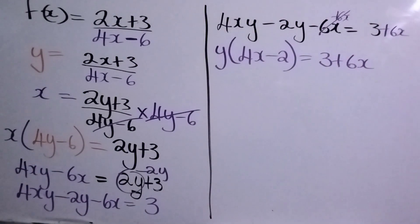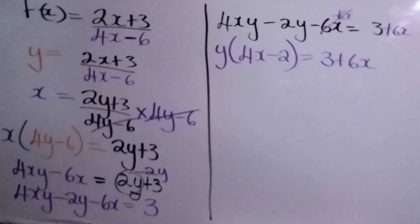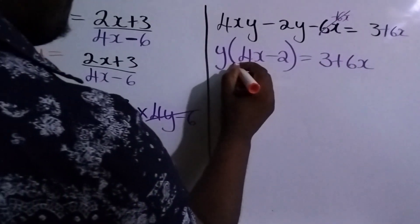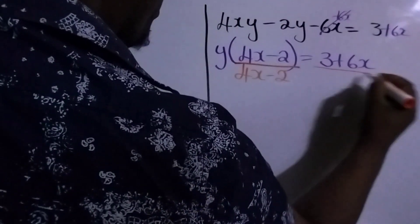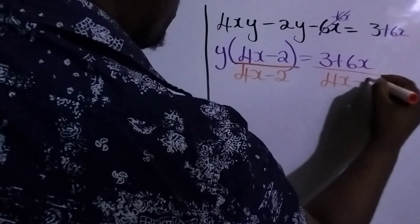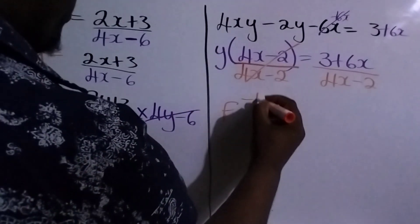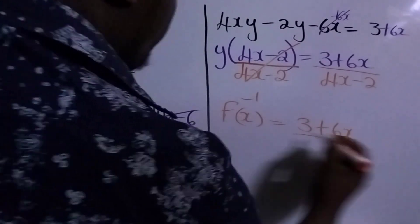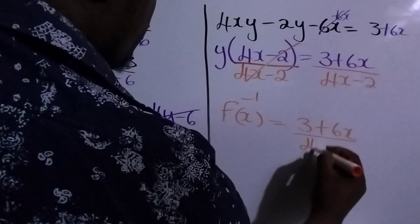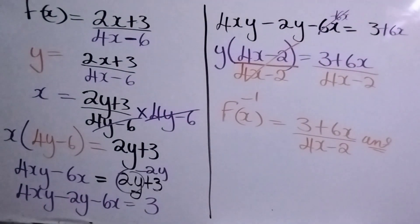And our final step is to get rid of this 4x. Now this is saying y multiplied by 4x minus 2, so what we're going to do is divide, because the inverse of multiplication is division. We go to one side, we do to both sides. So there we have it. So to write our answer, we write now f inverse of x is equal to 3 plus 6x divided by 4x minus 2. What are you guys waiting for? To be a part of my class, call my number. This is Lennox Bennett, I'm out.